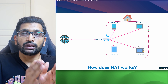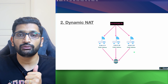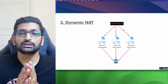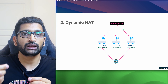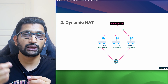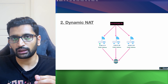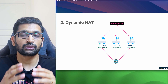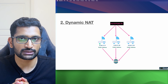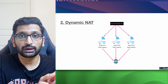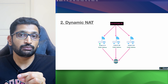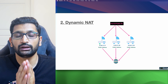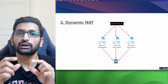The second type is dynamic NAT, which is more advanced than static NAT. Here we have a pool of public IP addresses, and whenever a device needs one, a random public IP is dynamically assigned from the pool and mapped to the private IP. This is an improvement over static NAT, but if the pool is exhausted we again run out of public IP addresses.